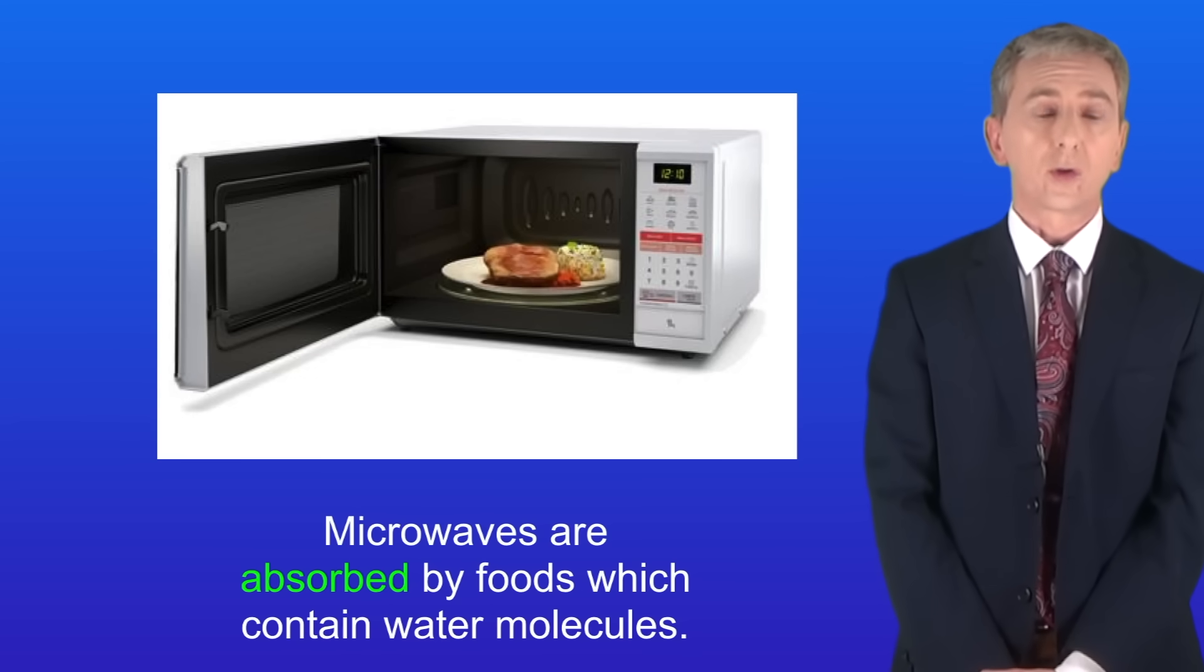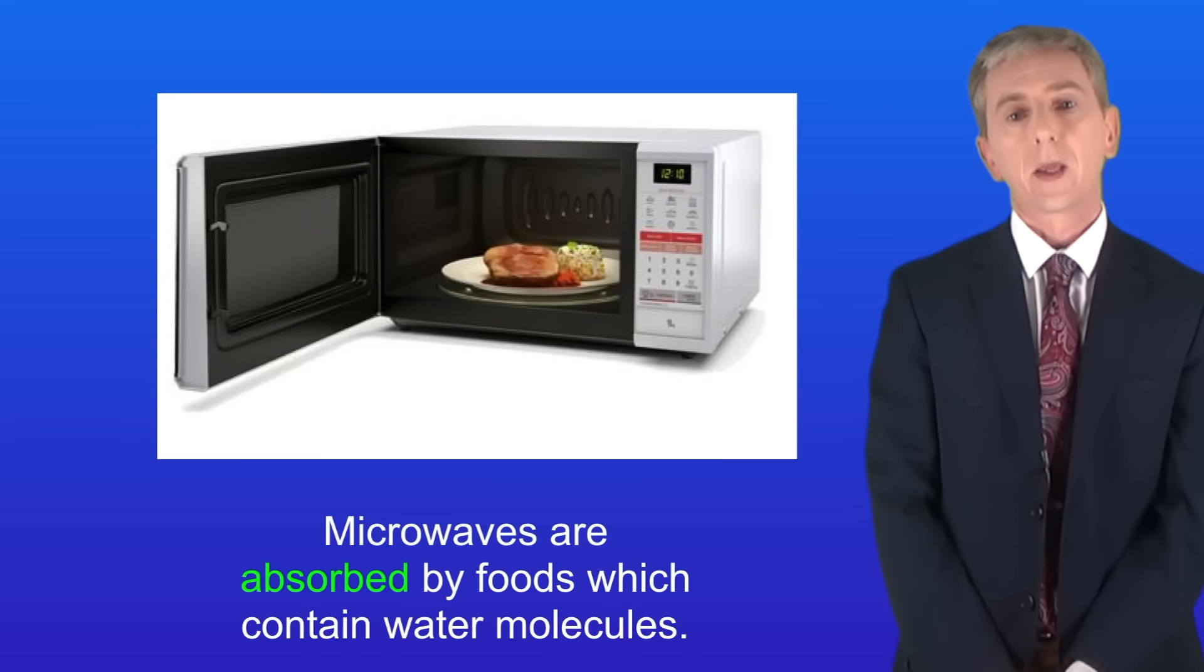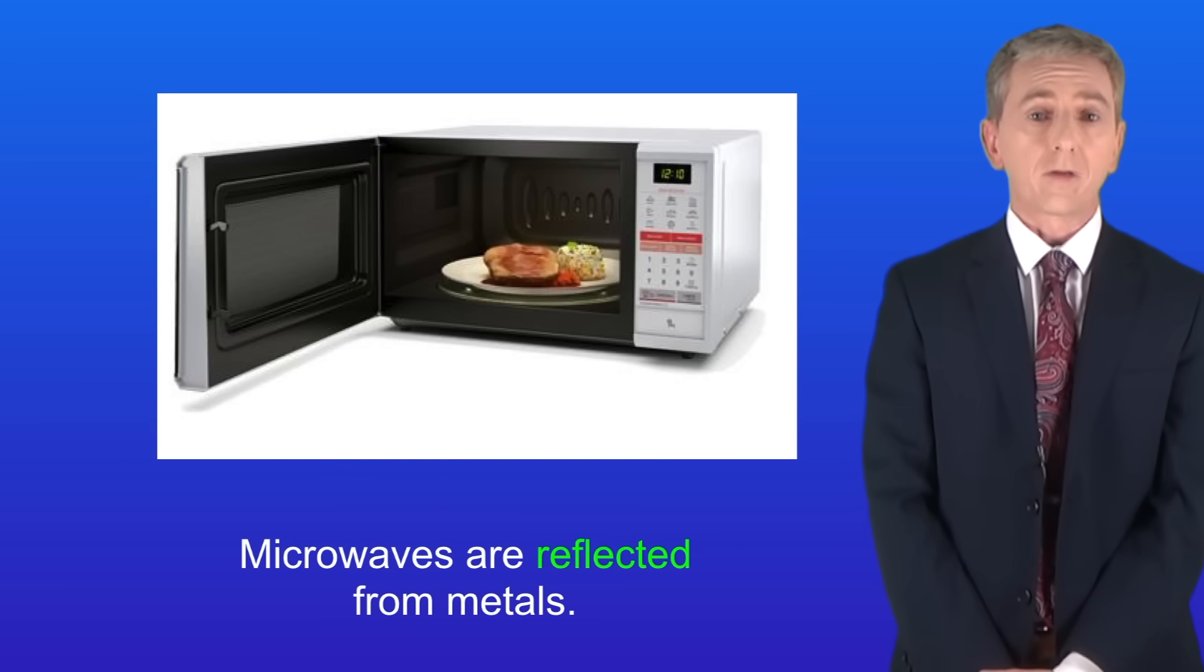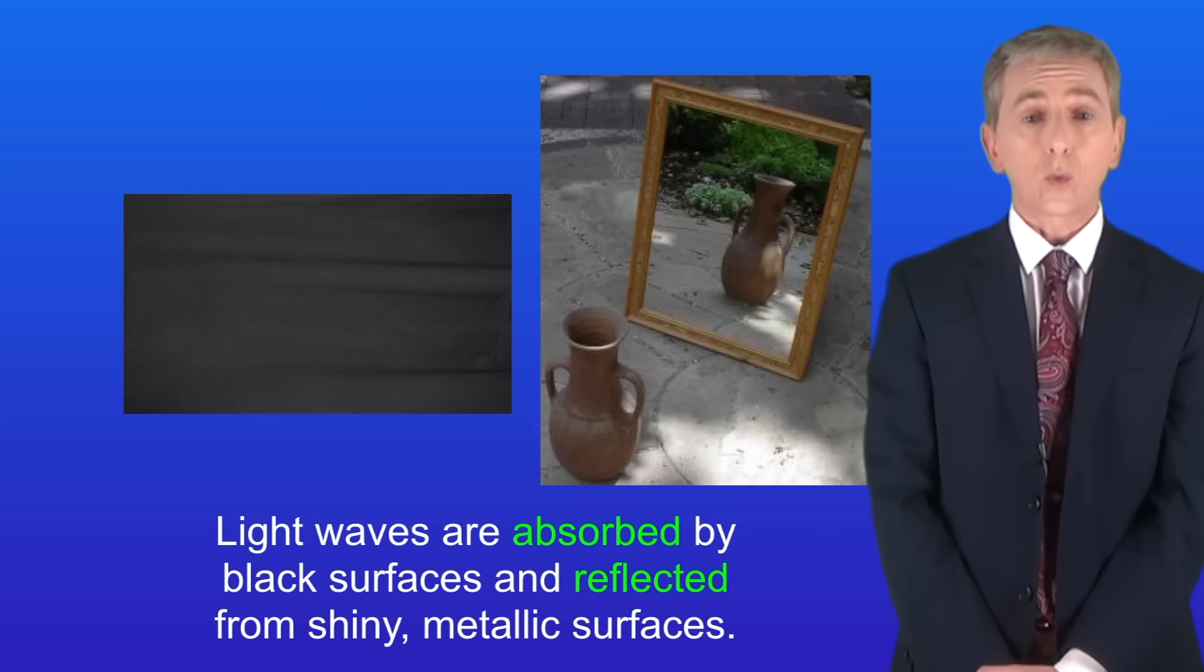Microwaves are absorbed by foods which contain water molecules. However, microwaves are reflected from metals. In contrast, light waves are absorbed by black surfaces and reflected from shiny metallic surfaces.